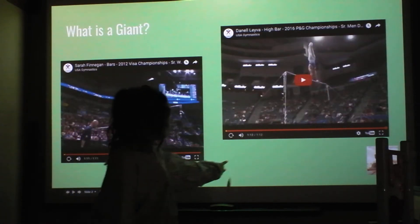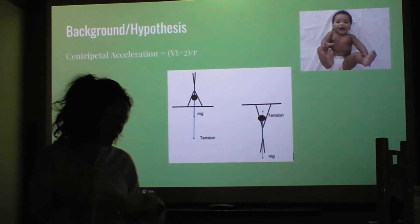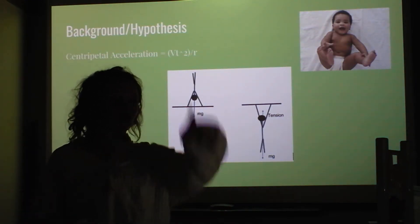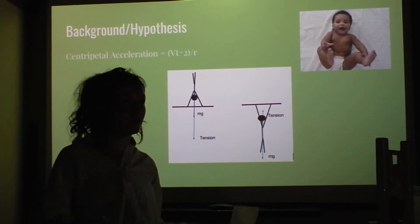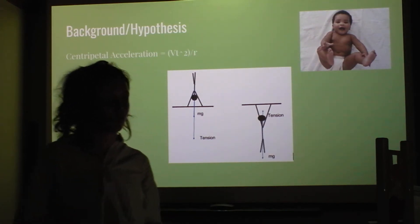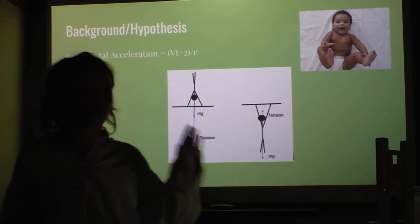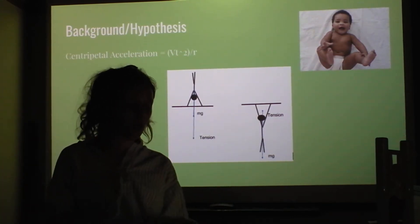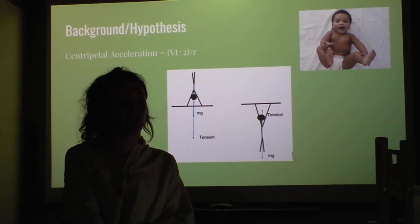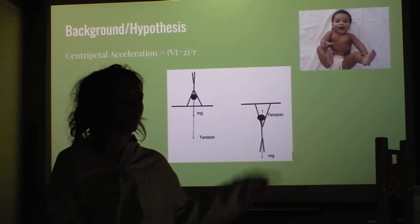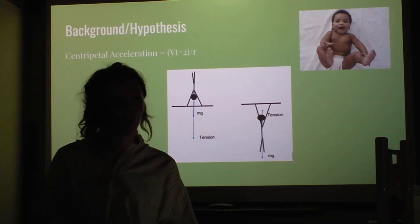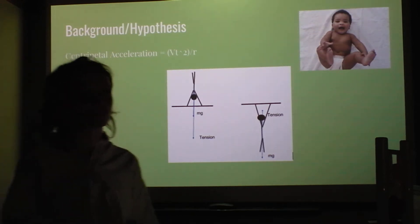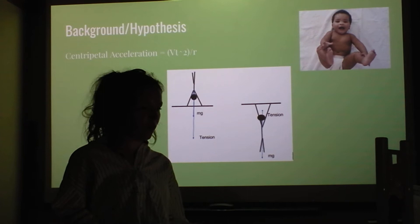So this is an Olympic gymnast doing it. So basically, that's what a giant is, it's just the circular motion around the bar. In the giants, you can do multiple different moves, like if you saw them there, they would release from the bar and then connect again. But for this lab, I just focused on the movement of the gymnast around the bar, and I basically wanted to figure out what the difference between a male and female gymnast in doing the giant was.